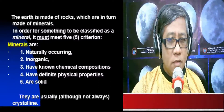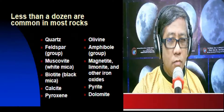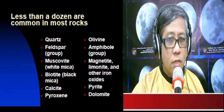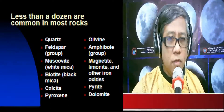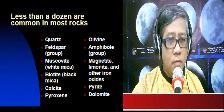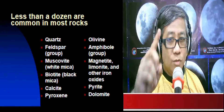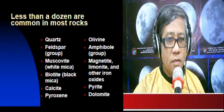The following are examples of minerals common in most rocks: quartz, feldspar, muscovite or white mica, biotite or black mica, calcite, pyroxene, olivine, amphibole, magnetite, limonite and other iron oxides, pyrite, and the most controversial mineral of them all — dolomite.